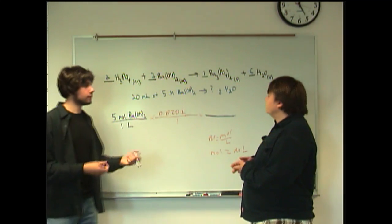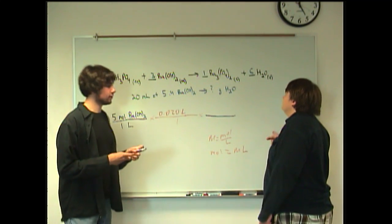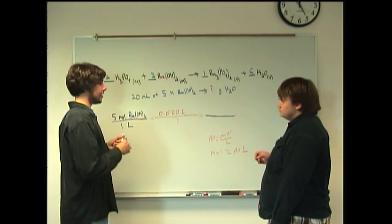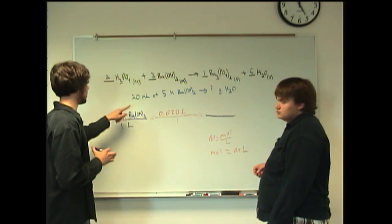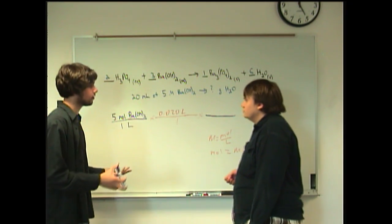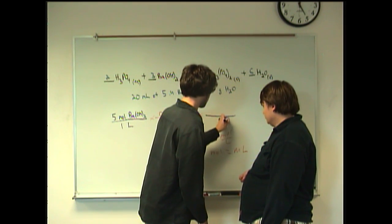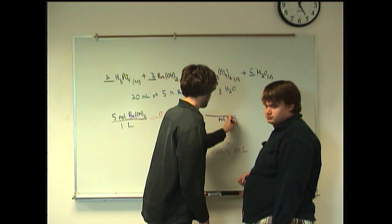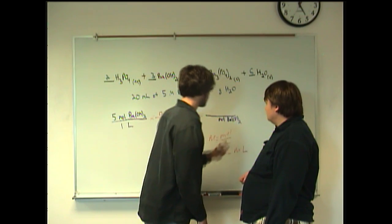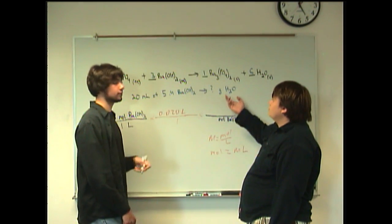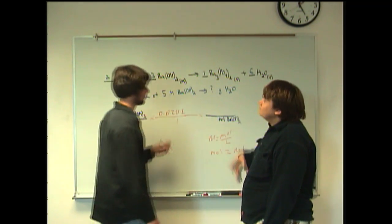Yeah. We have moles of one thing. So now we want to go to moles of other using mole ratio. Right. Exactly. So we got moles of barium hydroxide here. We don't want that. Okay. So put it on the bottom, right? Right. Yep. So we're going to put moles of barium hydroxide here. And then we put moles of what on the top? Well, we're looking for grams of water, so I am listing moles of water.